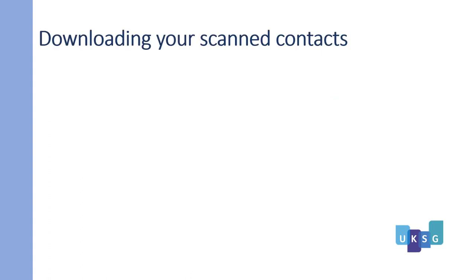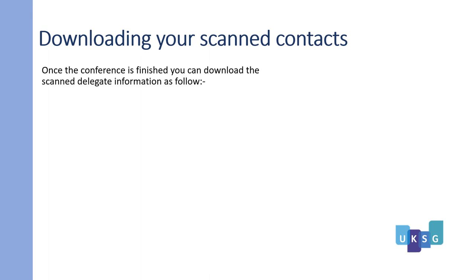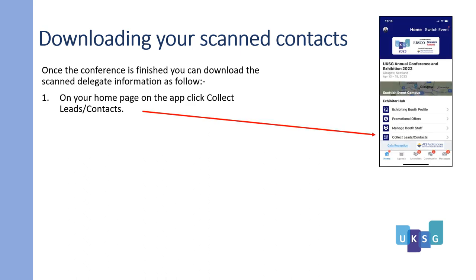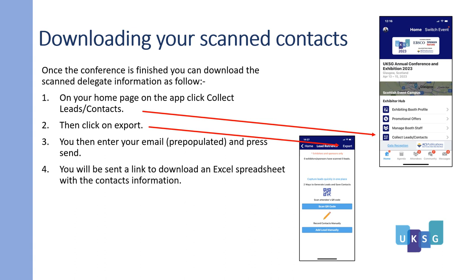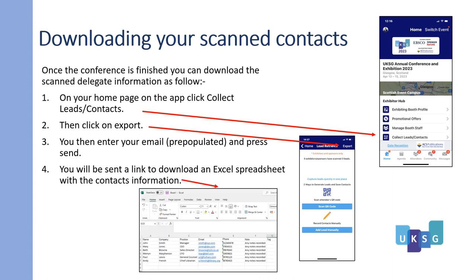How to download your scanned contacts. Once the conference is finished, you can download the scanned contact information as follows. On your home page on the app, click Collect Leads/Contacts, then click on Export. Enter your email address — which will be pre-populated — and press Send. You will be sent a link to download an Excel spreadsheet with the contact information.